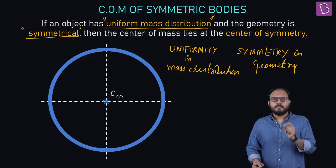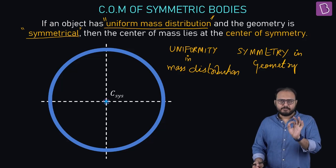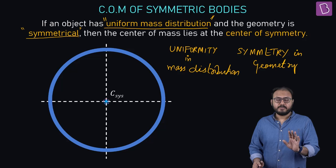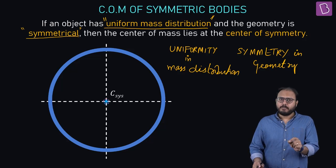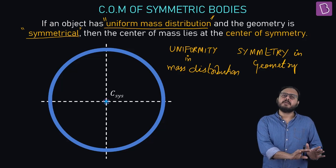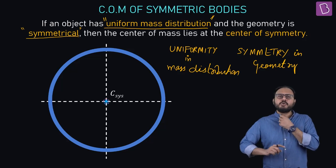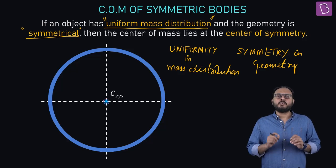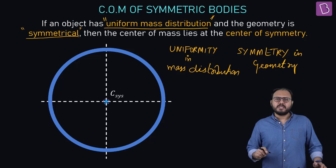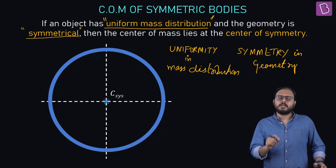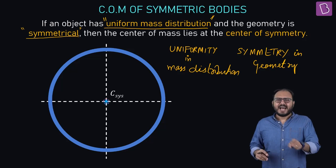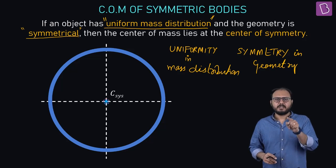Two conditions. If mass distribution is uniform, if mass distribution is uniform and there is a symmetry, then whichever unique point of symmetry you can figure out, whichever is you think is the most symmetric point or the center of symmetry, that point is center of mass.